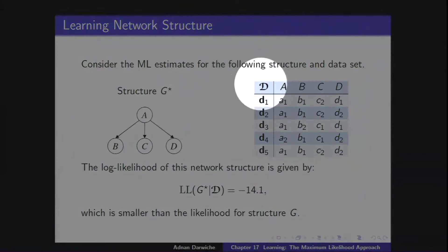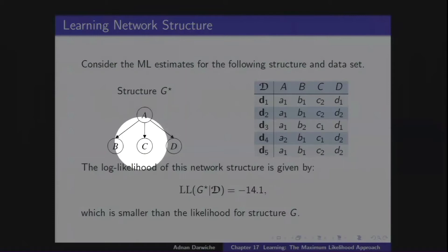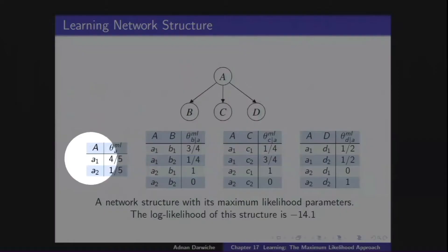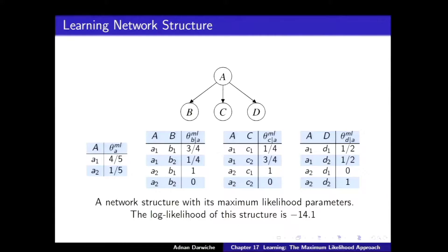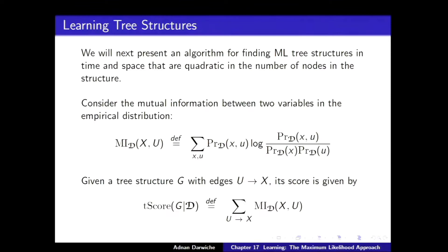The next slide shows a different structure over the same data set with variables A, B, C, D. That structure has its own maximum likelihood parameters. One set of parameters maximizes the probability of the data set, and plugging those in gives a distribution. Computing the log probability of the data under this distribution gives a worse score in this case. So we're visualizing the score of a structure using the likelihood principle, and we will need to augment this notion of score.